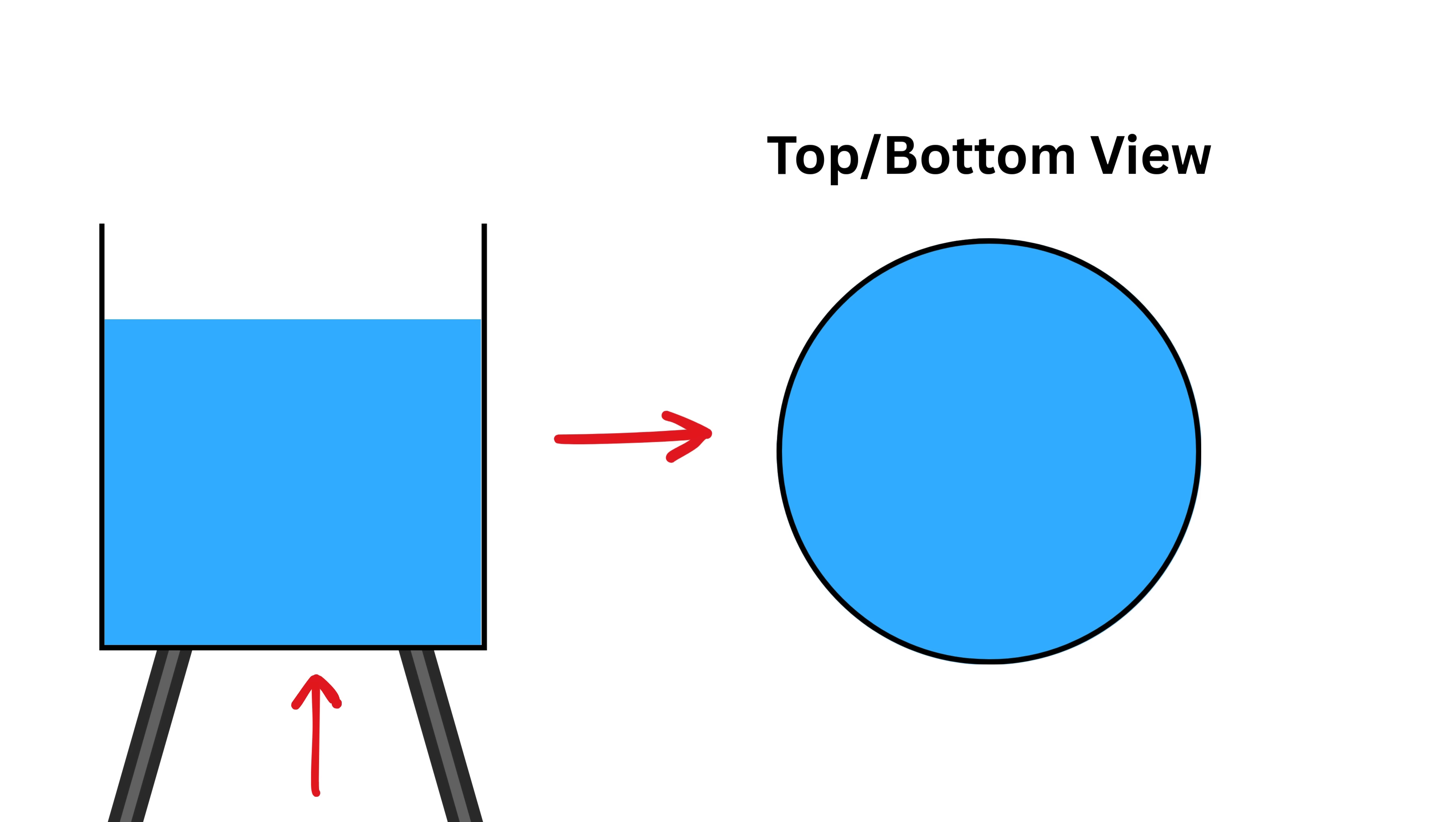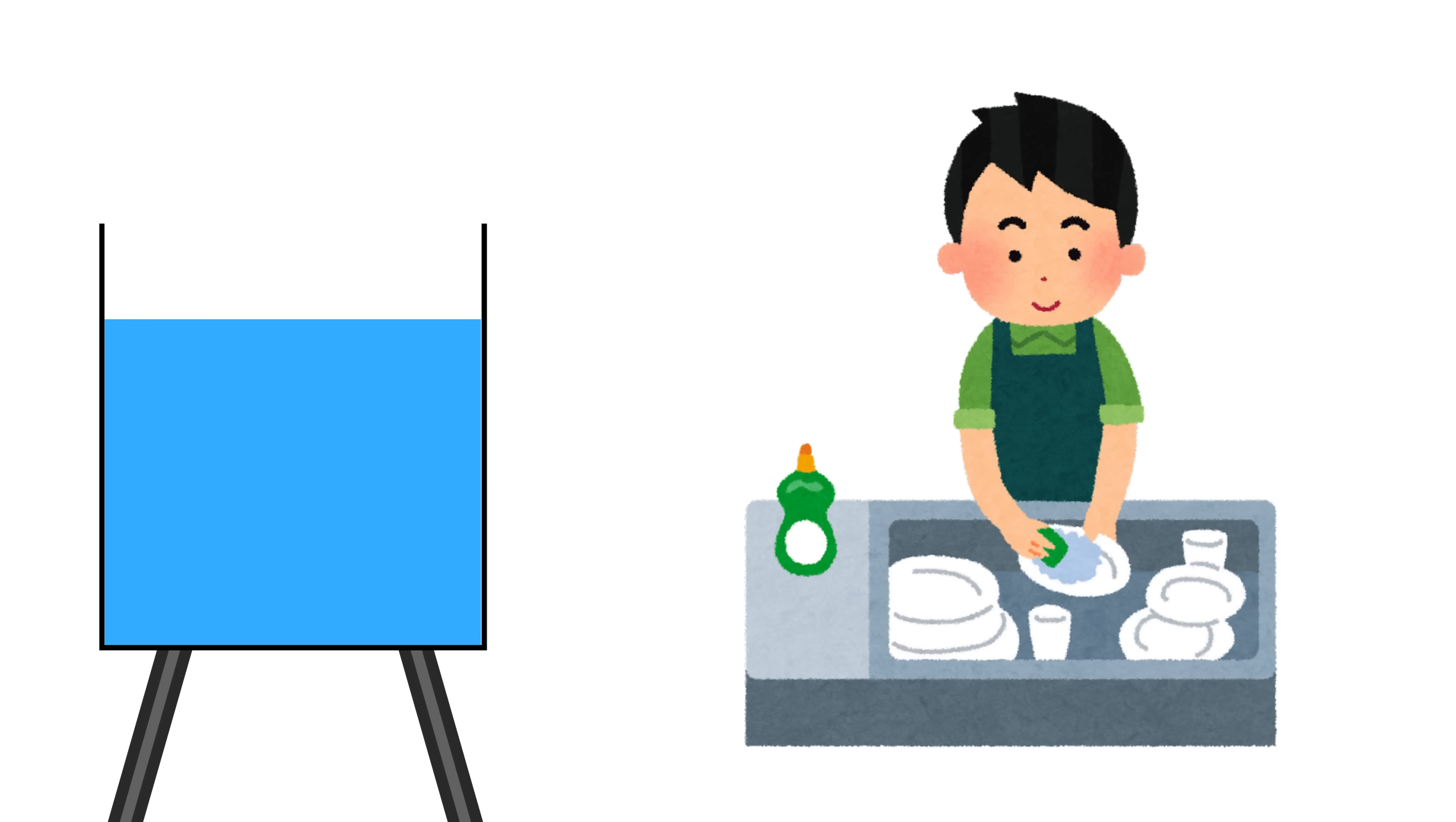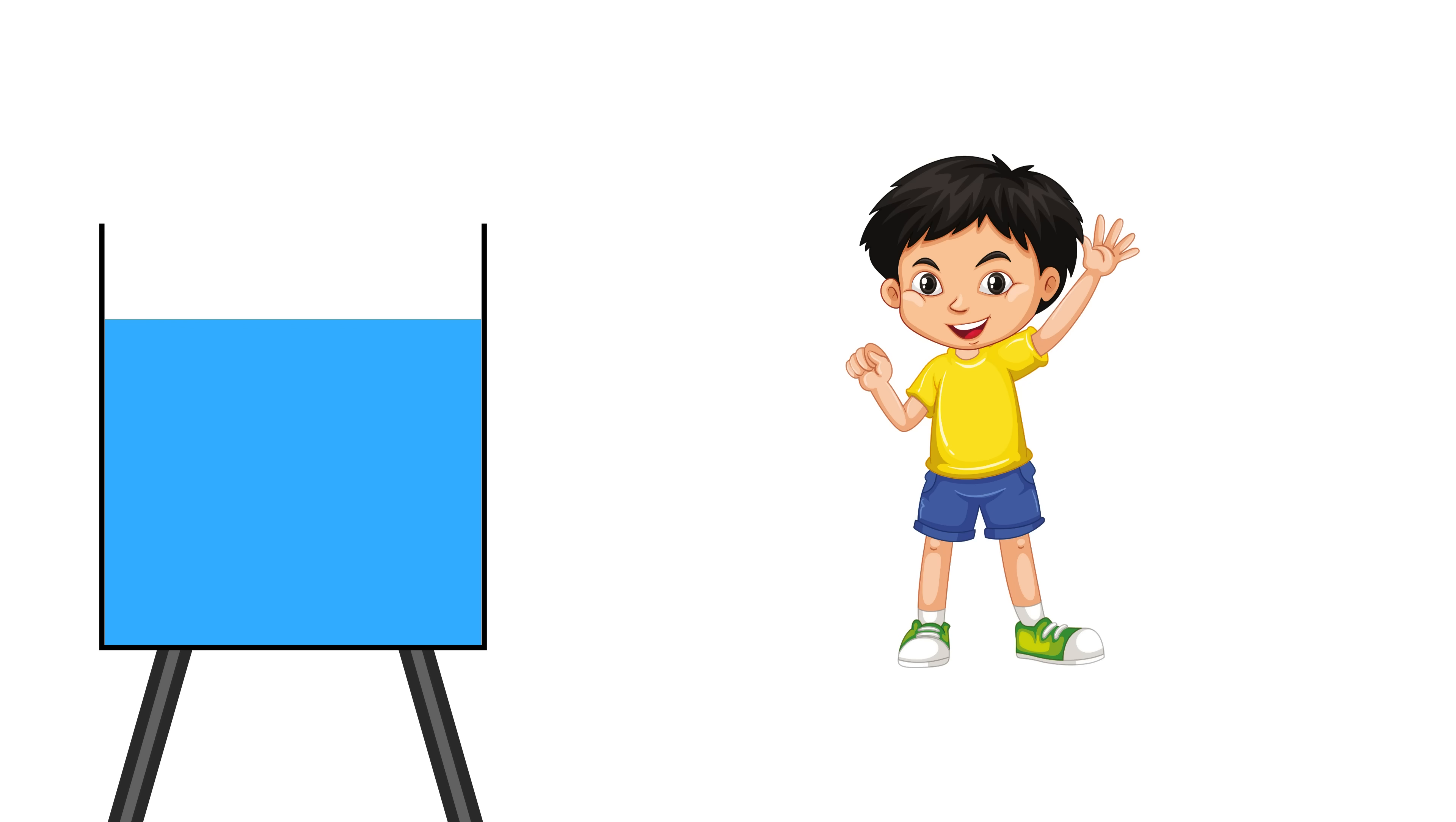You have a water tank at the top of the terrace. It has a flat base and stores rainwater for general household use. One day, a naughty kid pokes a small hole at the bottom of the tank using a screwdriver.